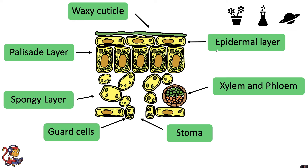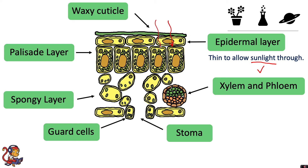Starting with the epidermal layer that covers the leaf — the epidermal layer is thin to allow sunlight through. This is how we get our sunlight for photosynthesis. This layer being very thin allows the sunlight to penetrate through the top of the leaf and get to the cells below.